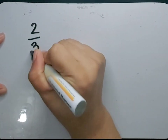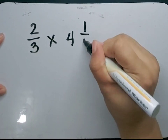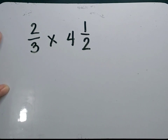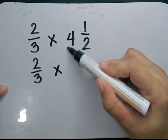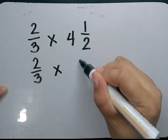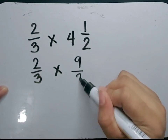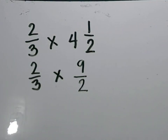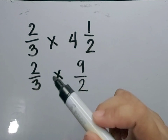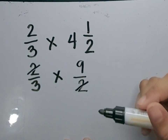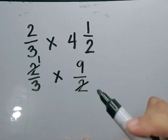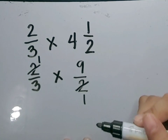Let's have another example: 2 thirds times 4 and 1 half. The first step is to change the mixed fraction to improper fraction. 2 thirds times — 2 times 4 is equal to 8, plus 1 is equal to 9. Then let's copy the denominator. Let's multiply using the cancellation method. Let's find the GCF of any of the numerator and denominator. Let's have 2 and 2. Their GCF is 2. Let's divide them by 2. 2 divided by 2 is equal to 1, and 2 divided by 2 is also equal to 1.